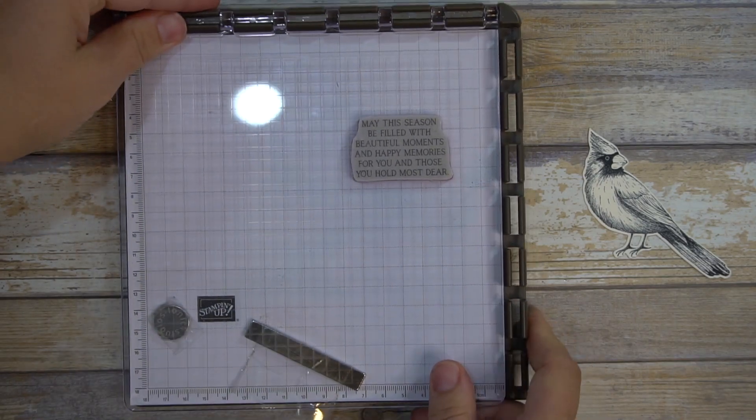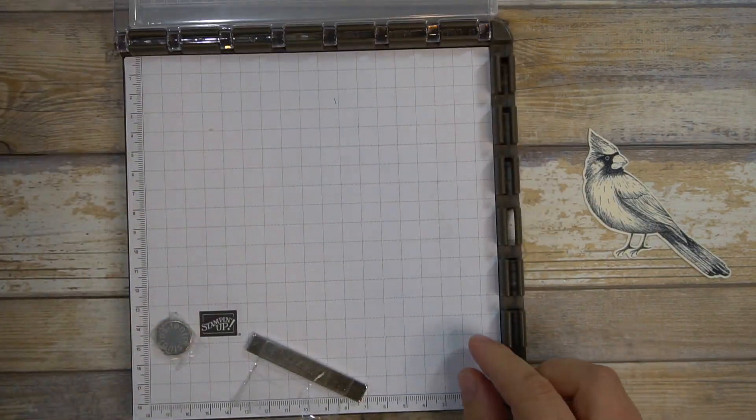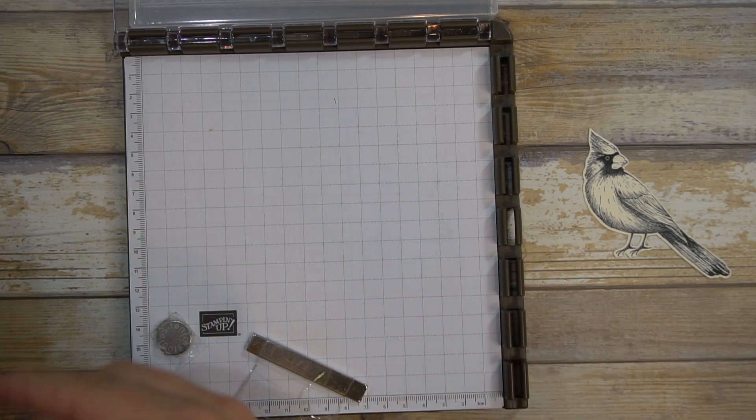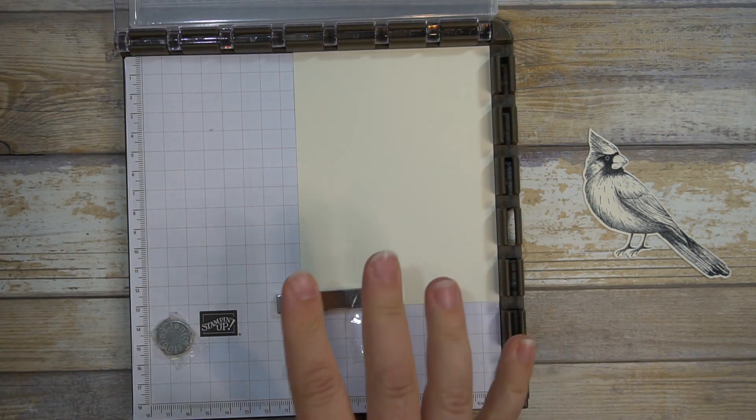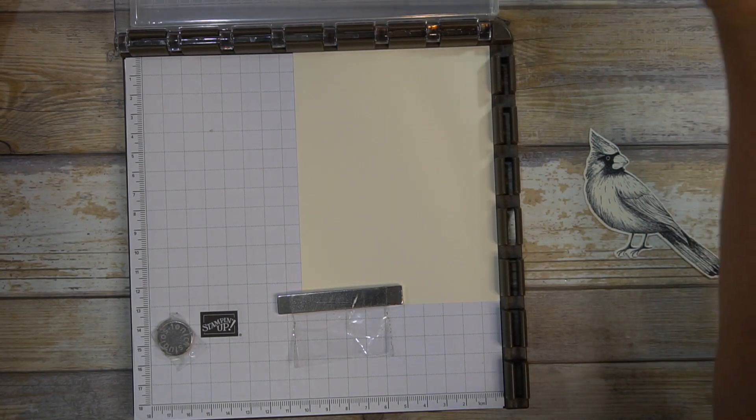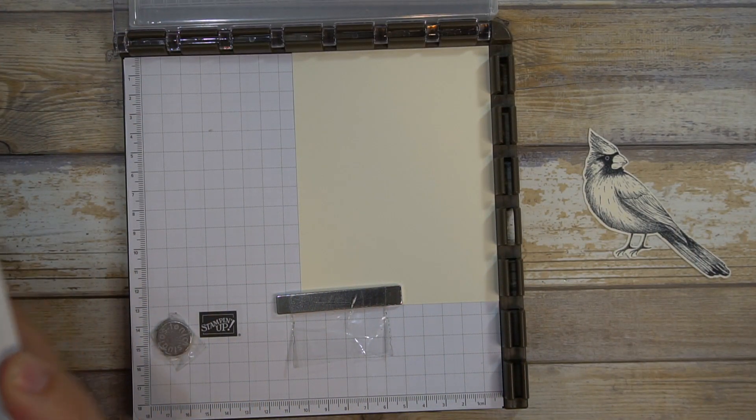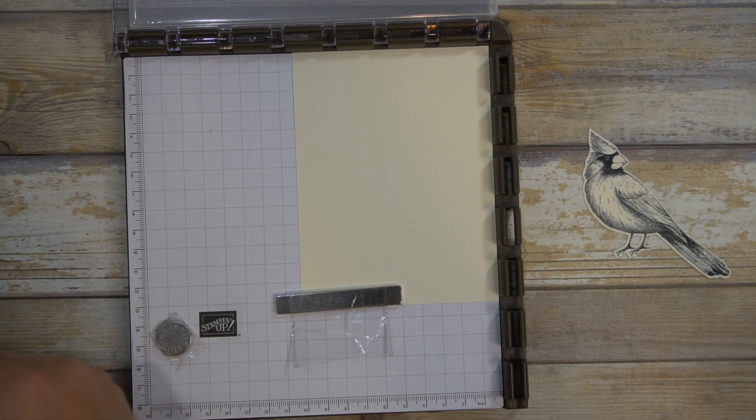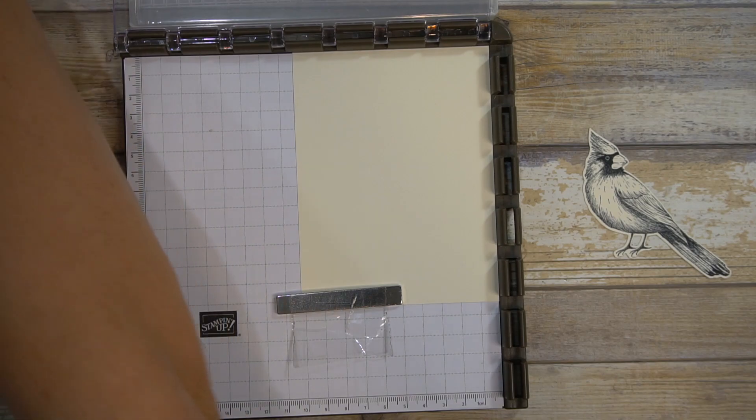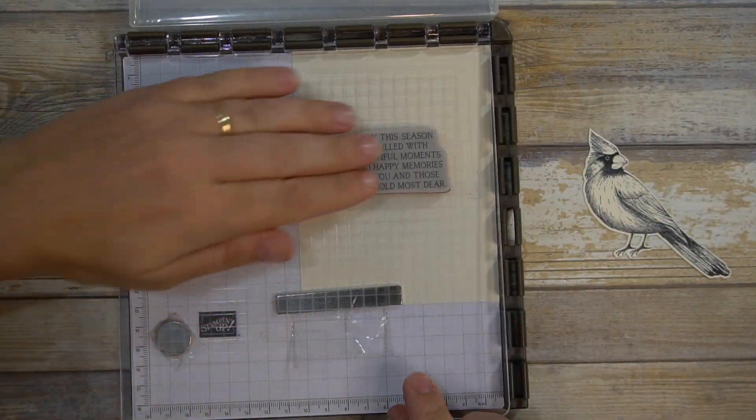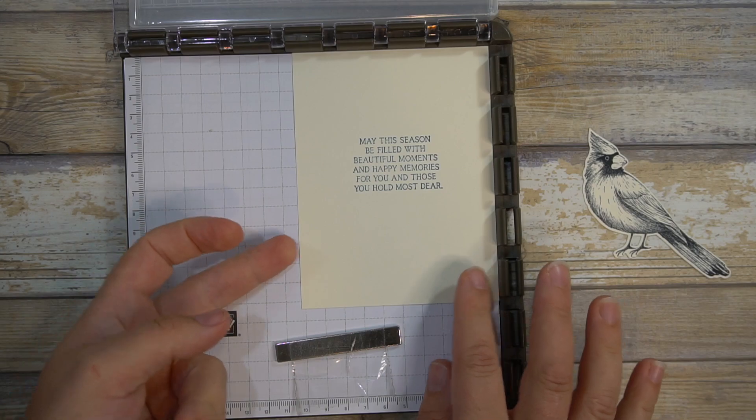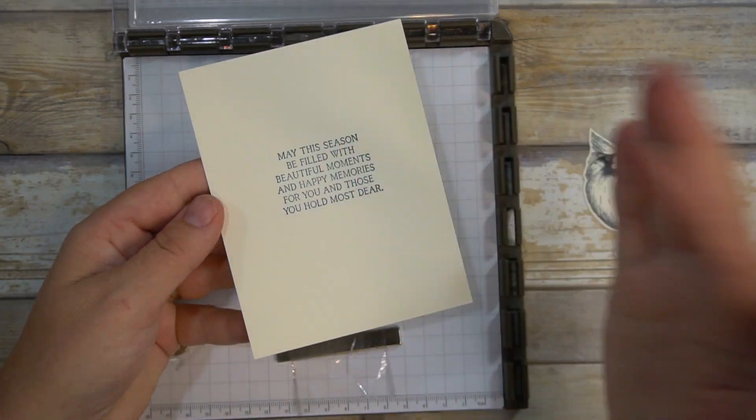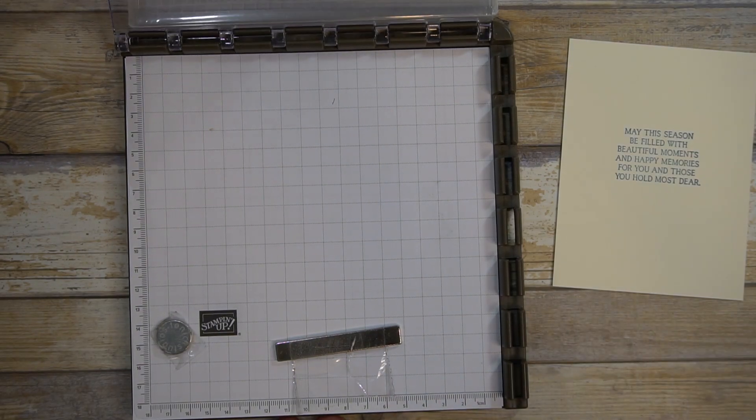So we're going to go ahead and stamp the inside of the card and I do have two Stamparatuses, and it's really wonderful to have because it's very handy especially for classes. When I just stamped this directly I was having a few issues, first of all with getting crooked, but also some of the letters were getting kind of filled in. The Stamparatus has a lot of handy features and having a nice even stamp image is really a huge benefit in my opinion.